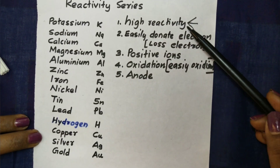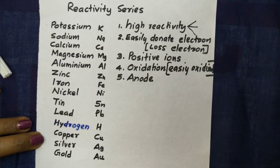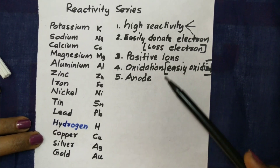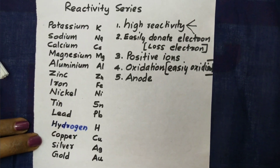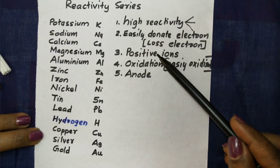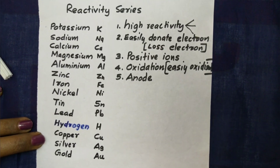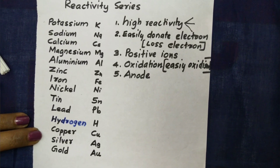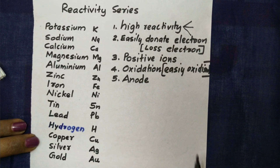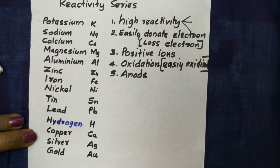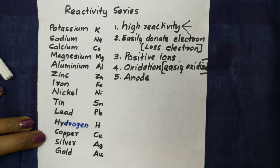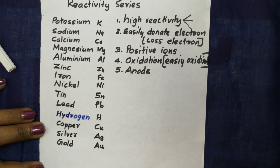The top elements show low reactivity with water and air. The opposite of donating electrons is accepting or gaining electrons. The tendency to become positive ions — that tendency relates to oxidation. The other property of these elements involves oxidation and reduction.